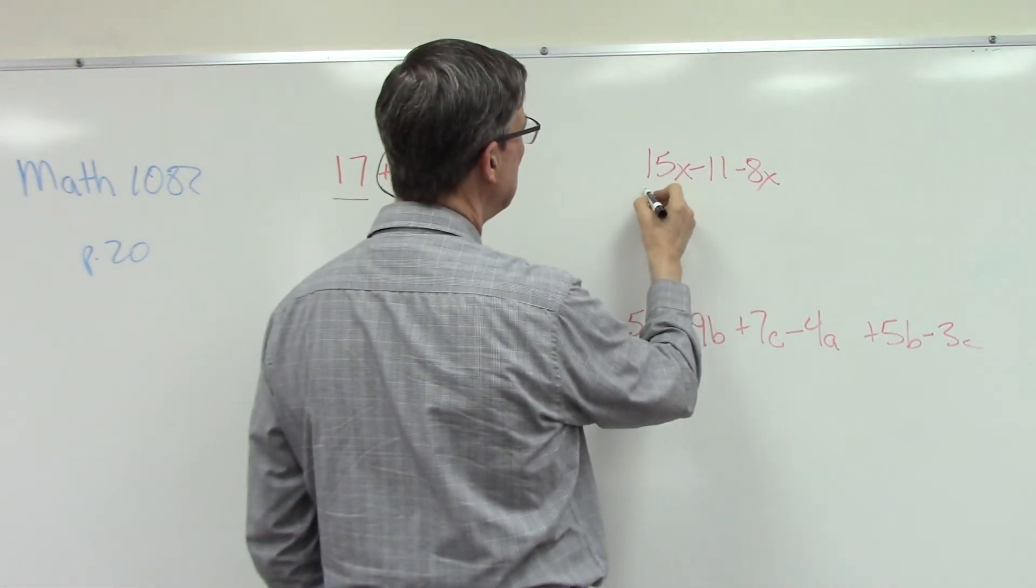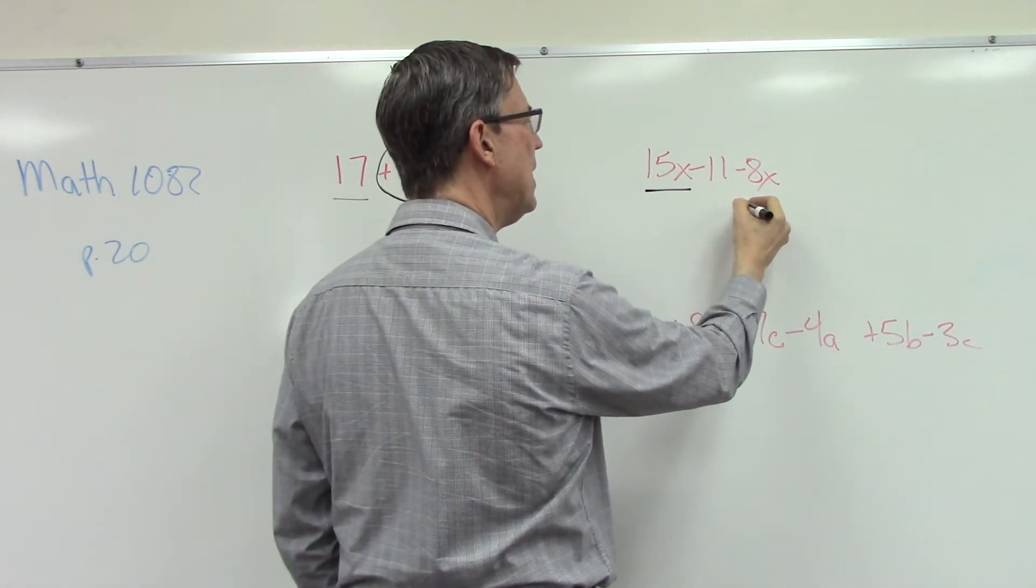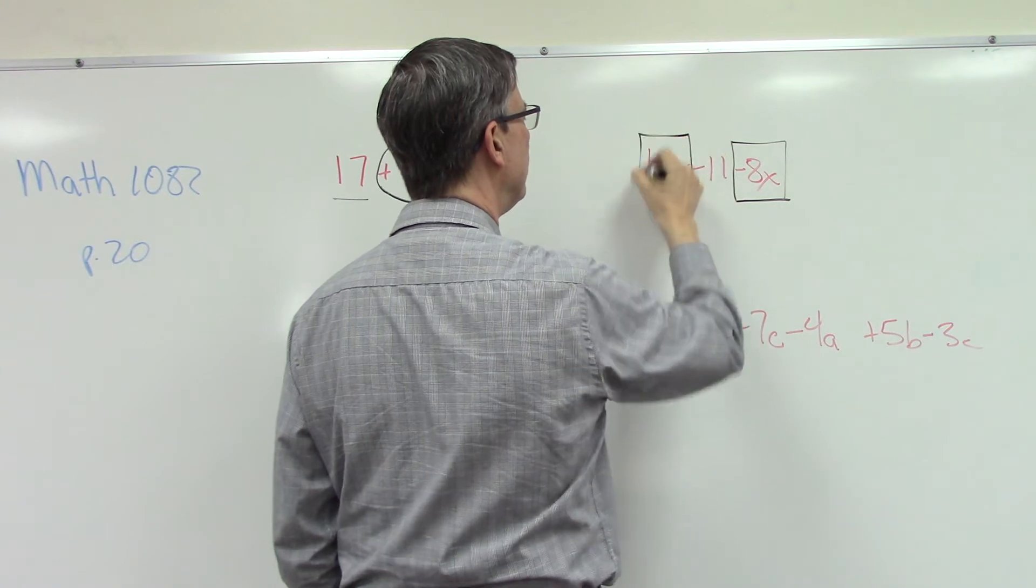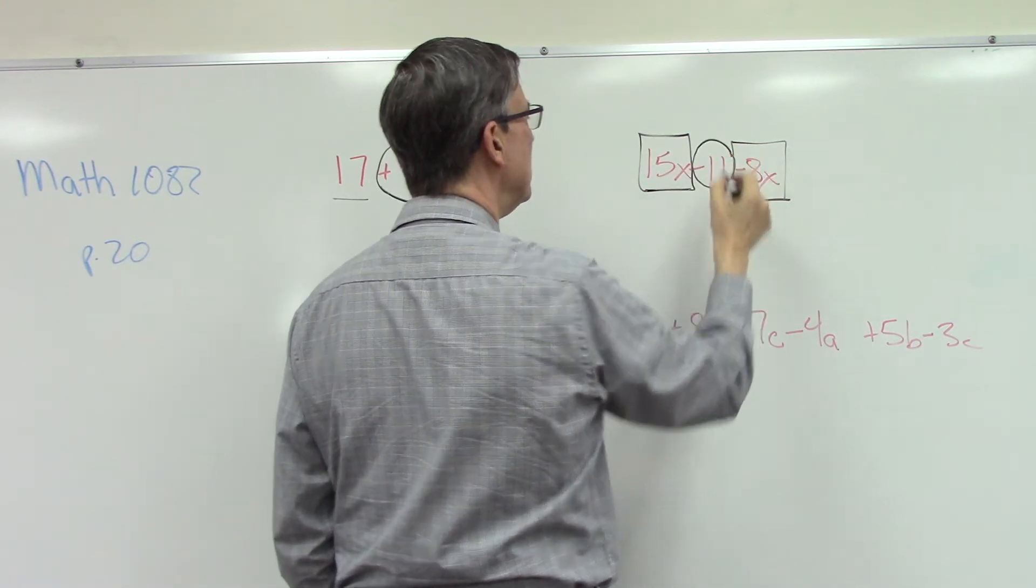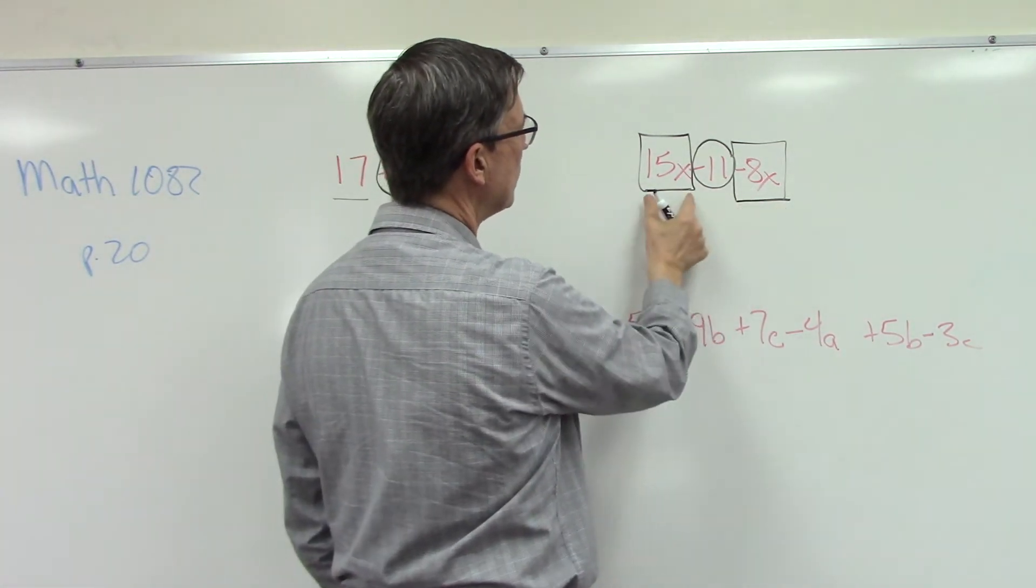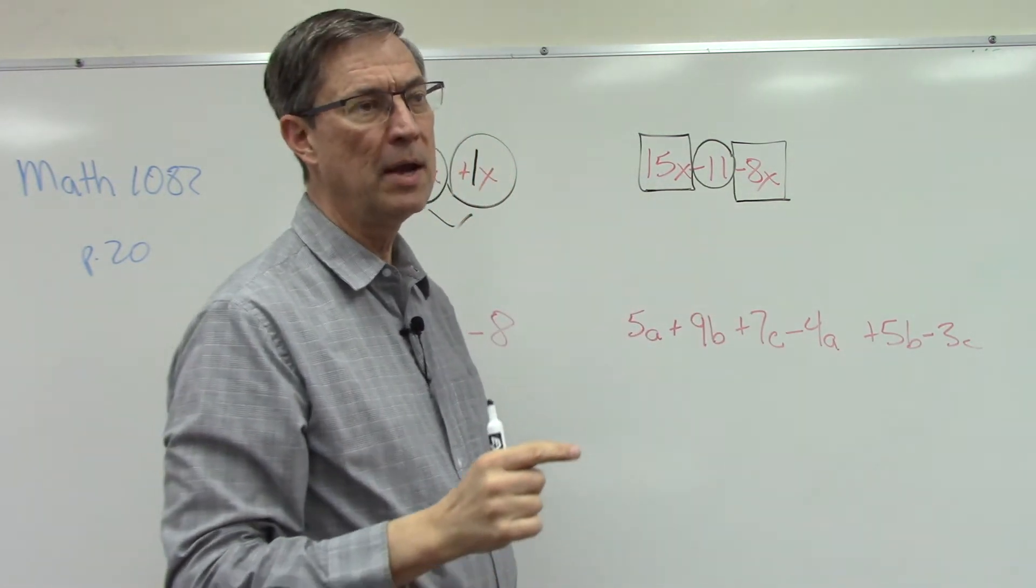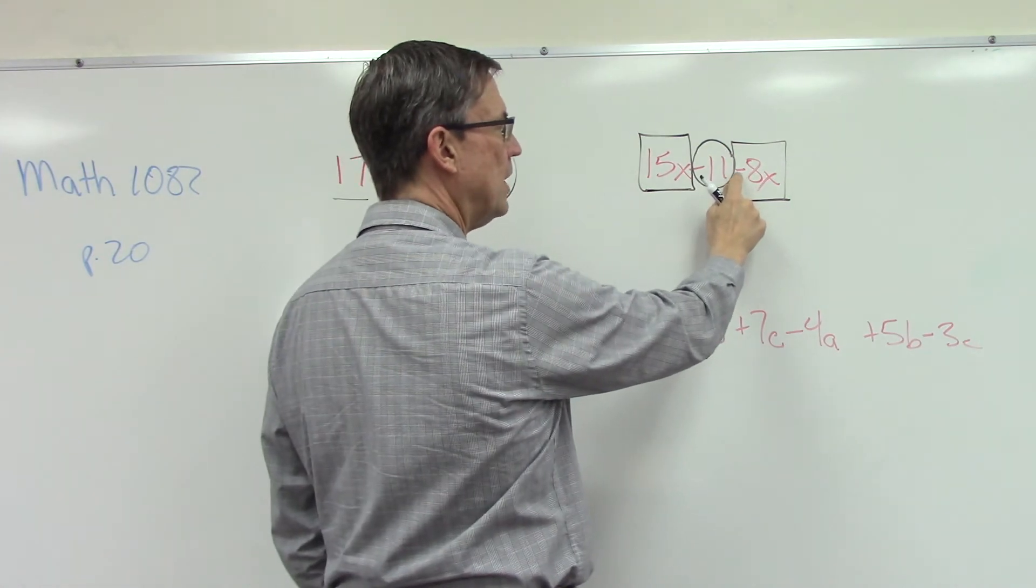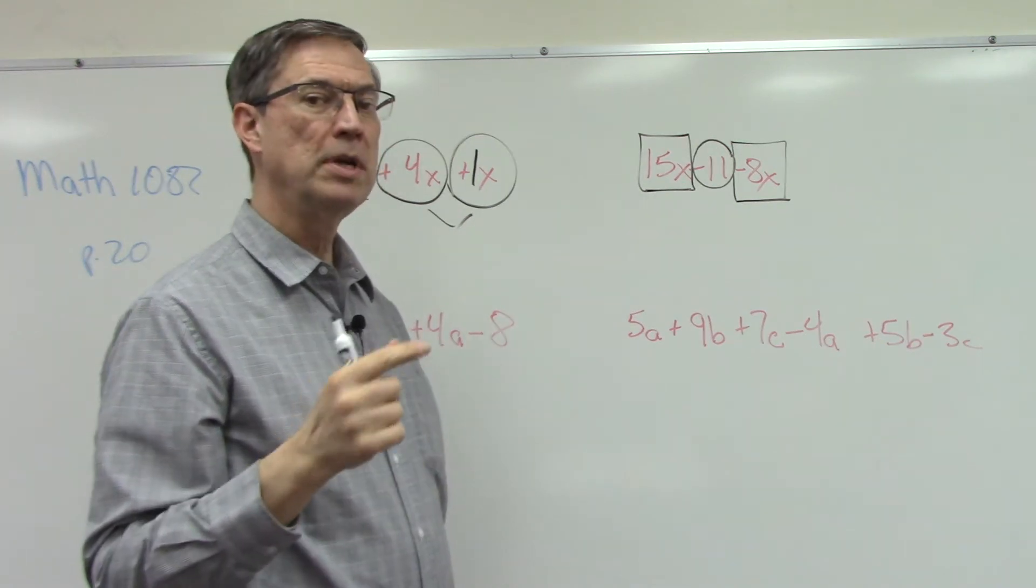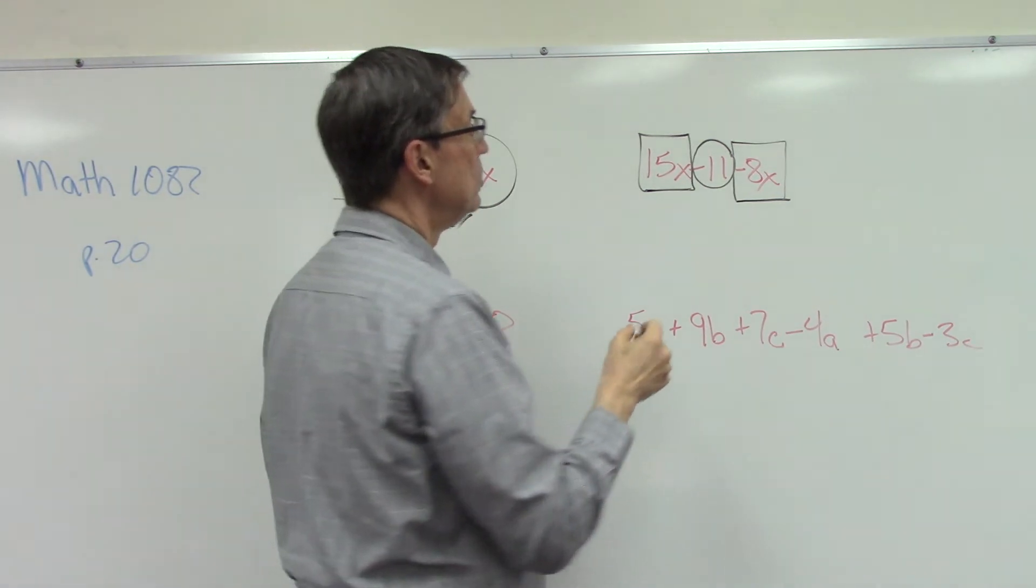Because when we're adding we can switch the order. Now let's look at this one. You'll notice that 15x is an X term, but look at this, we have 8x but it's not negative 8x. I'm going to put a box around these, and I'll just put a circle around the negative 11. So what that means is these two are like terms so I can combine them. I'm not going to add 15 plus 8 to get 23. I can't do that because I need to keep track of this negative sign in front of the 8, which actually makes that a negative 8. If it makes more sense to you to change all the subtractions to addition, but don't forget change the second number to its opposite, you could write this as plus negative 8x.